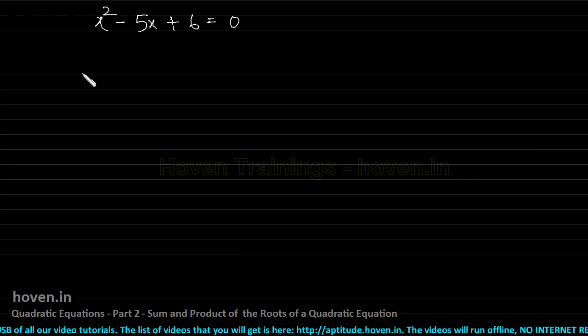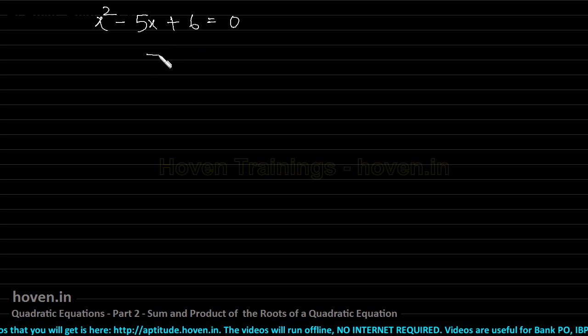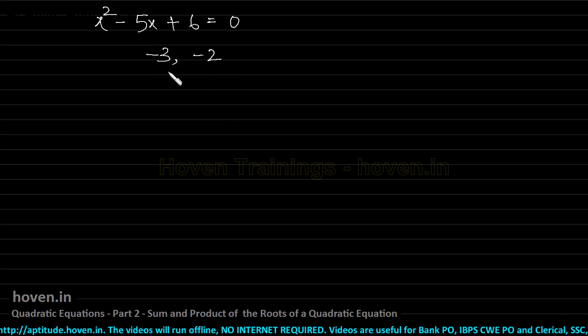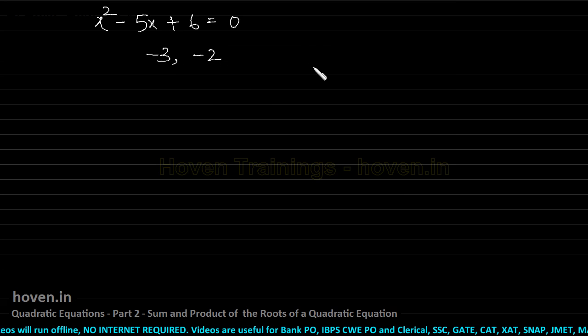Now one method is to actually solve this equation, find out the roots. Let us suppose the roots come out to minus 3 and minus 2. Then to add them, you simply write minus 3, minus 2, minus 5 and multiply them, whatever the answer comes, that is a longer method.